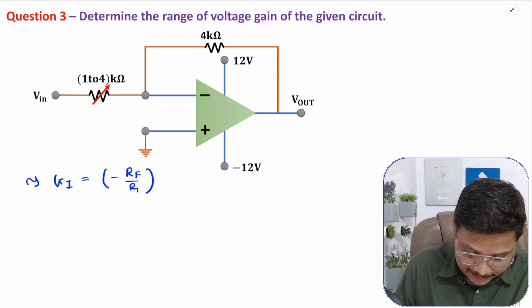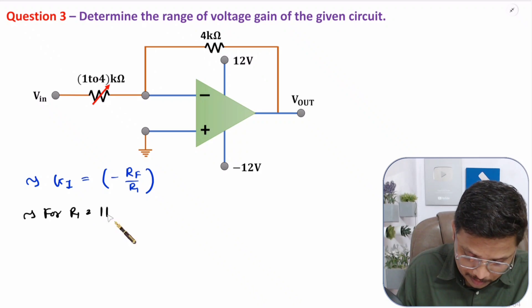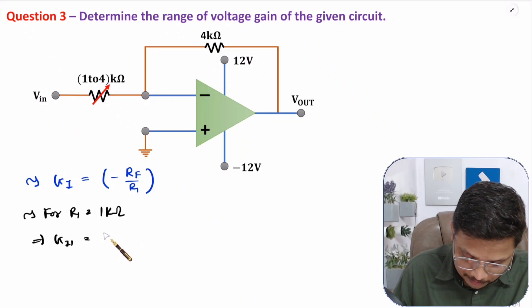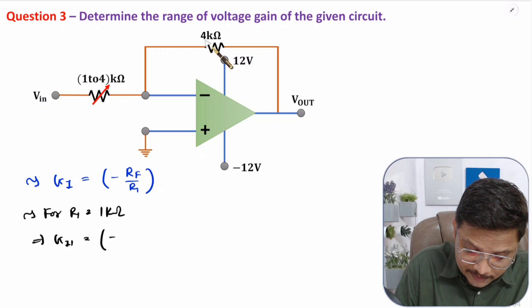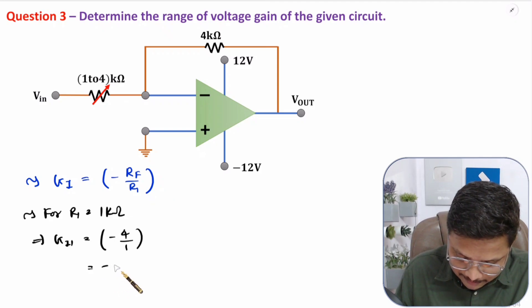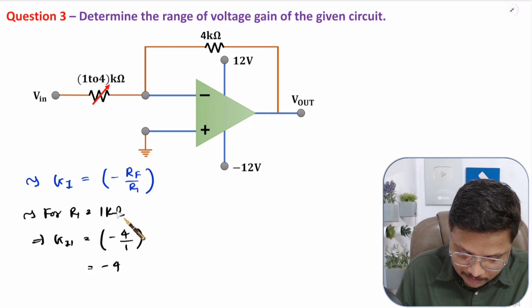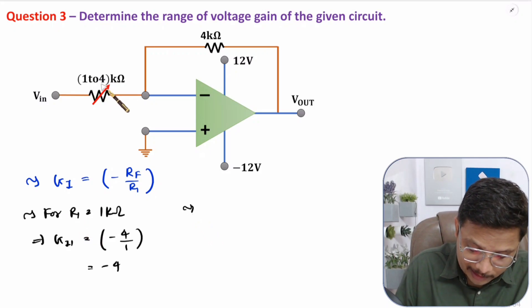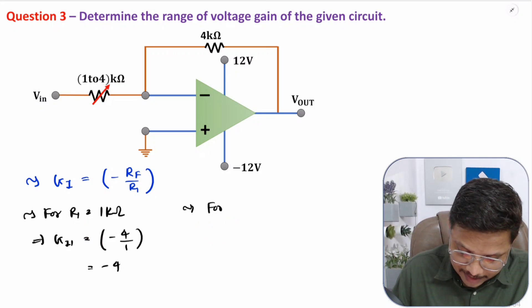Let us consider case one where R1 equals 1 kilo ohm. Gain G1 will be minus RF by R1 — RF is fixed at 4 and R1 is 1, so gain is minus 4. Now if we change R1 to 4 kilo ohm, we get a different gain.